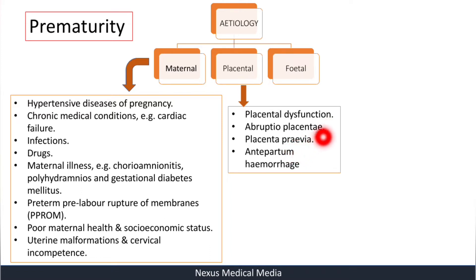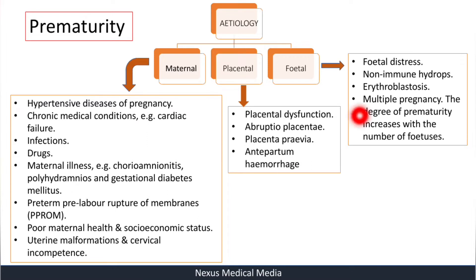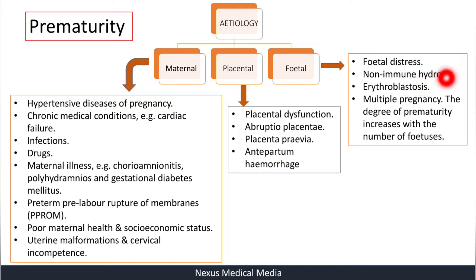Fetal causes include fetal distress, non-immune hydrops, erythroblastosis, and multiple pregnancies. The degree of prematurity increases with the number of fetuses.